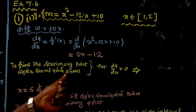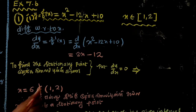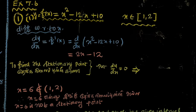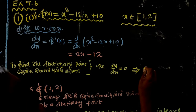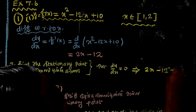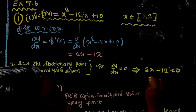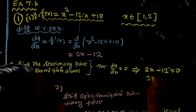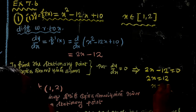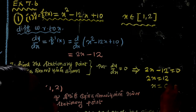To find the critical point, we set dy by dx equal to 0. If dy by dx is equal to 0, then 2x minus 12 is equal to 0. So 2x equals 12, which gives x equals 6.